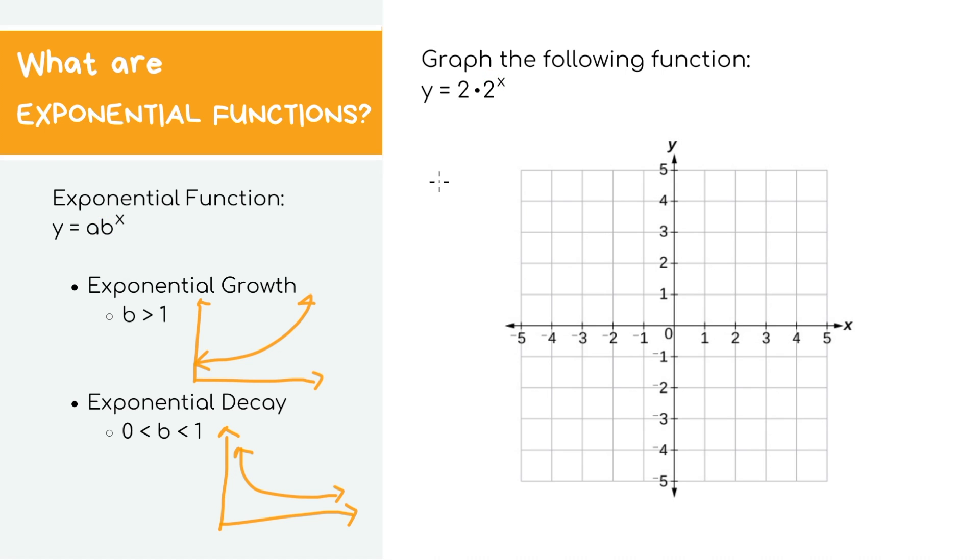In order to graph these equations, really all you need to do is start plugging in numbers. I usually use negative 2, negative 1, 0, 1, and 2. Let's plug this first one in together where x equals negative 2. What we'll do is replace negative 2 for x in the original equation and try to figure out what the y value is. We'll get 2 times 2 to the power of negative 2.